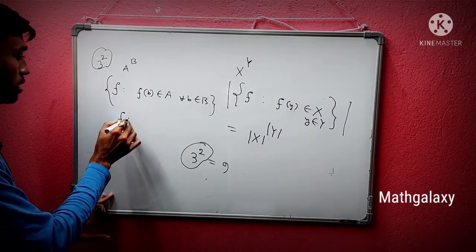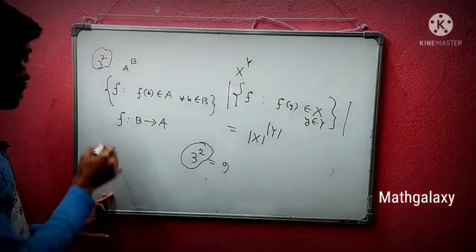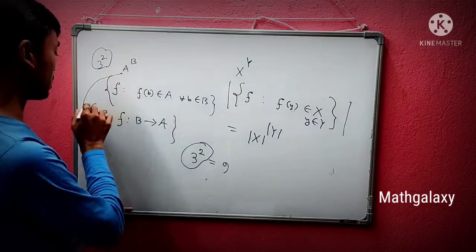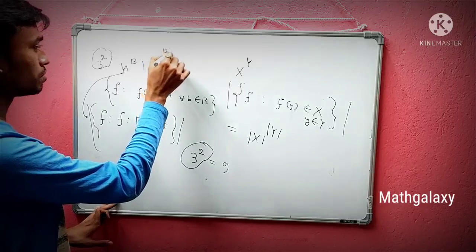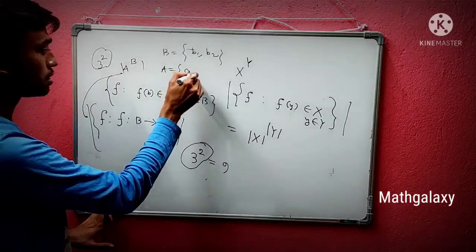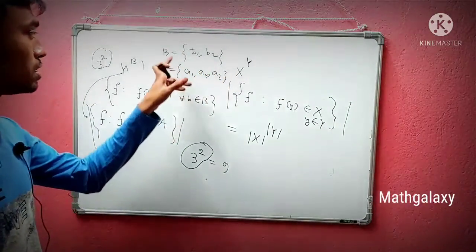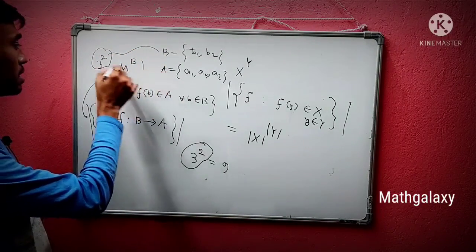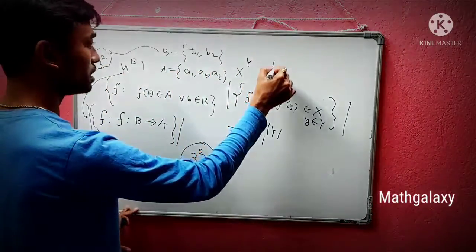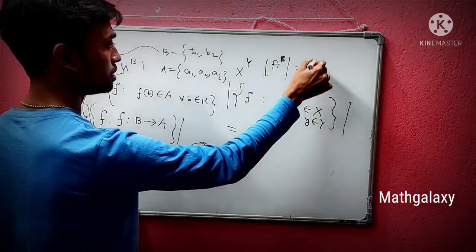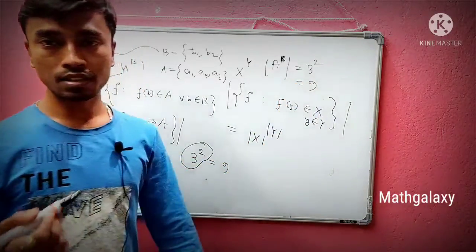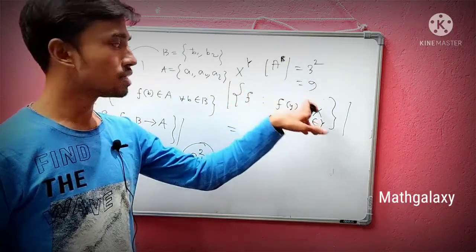So A^B is the collection of all those functions from B to A. The cardinality of this set: if B = {b₁, b₂} with |B| = 2, and A = {a₁, a₂, a₃} with |A| = 3, then the cardinality of A^B is 3 to the power 2, which is 9. So there are 9 functions from B to A.